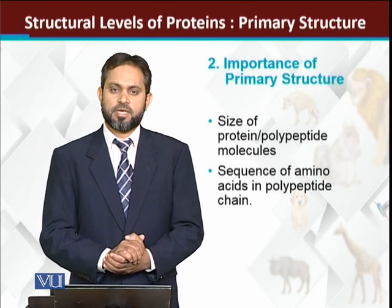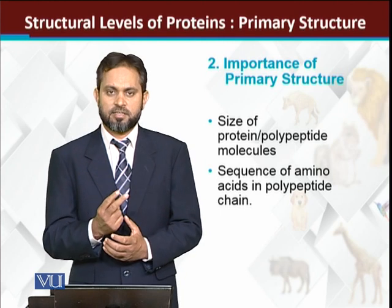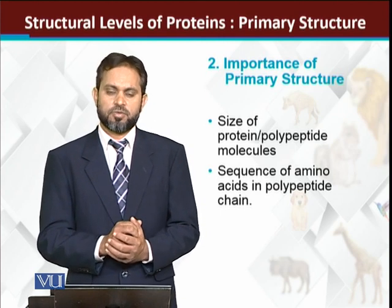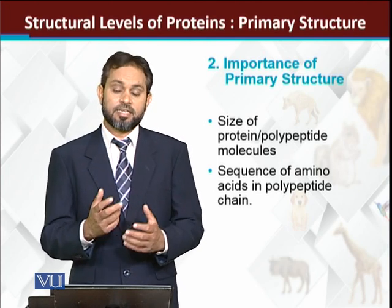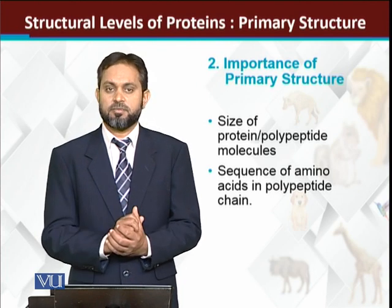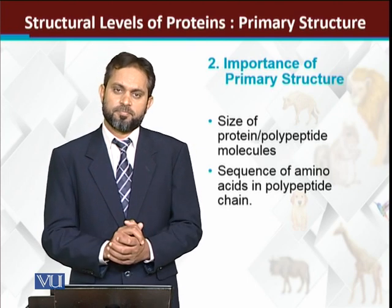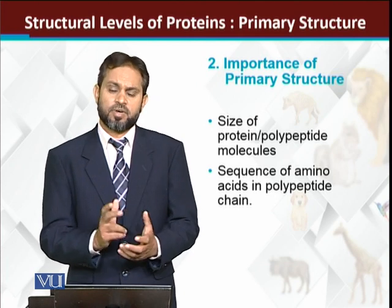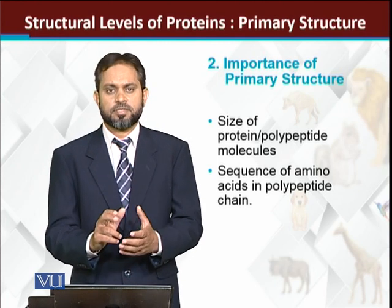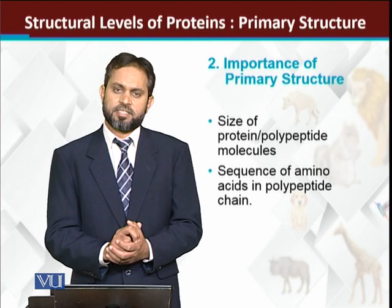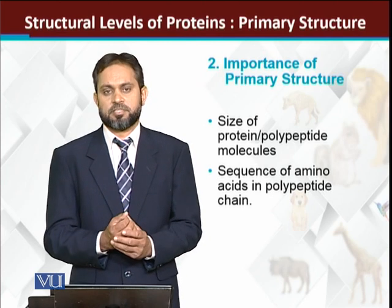Now the importance of primary structure. Number one: the primary structure tells us about the size of the protein — its molecular weight. If a protein's primary structure is based on 100 amino acids, and each amino acid is about 110 Daltons, that gives approximately 10 kDa molecular weight. So the primary structure allows us to estimate the size of the protein.